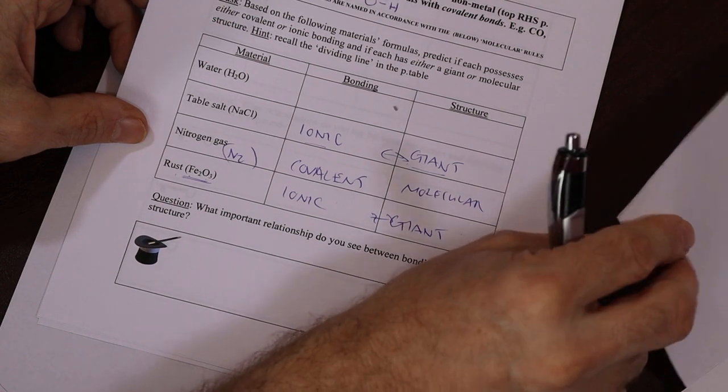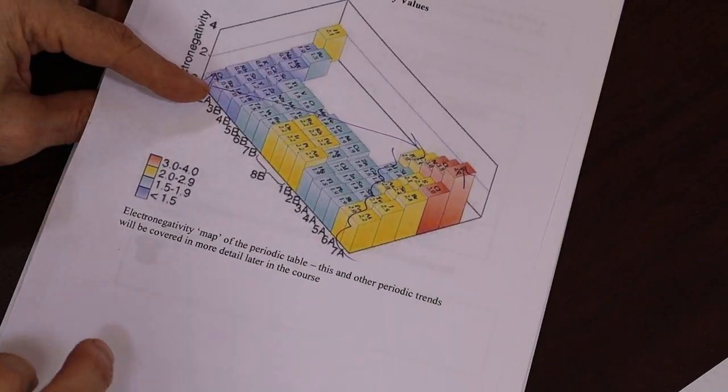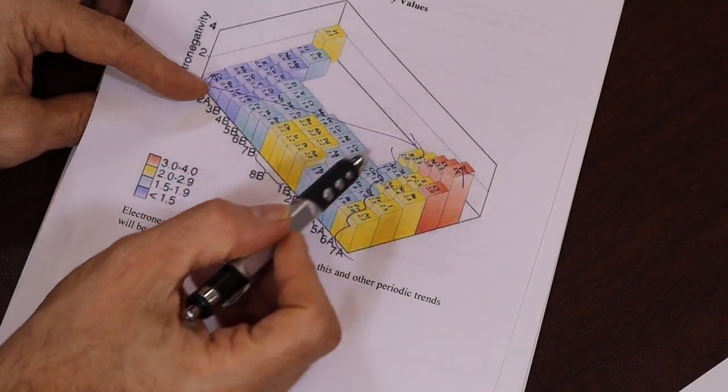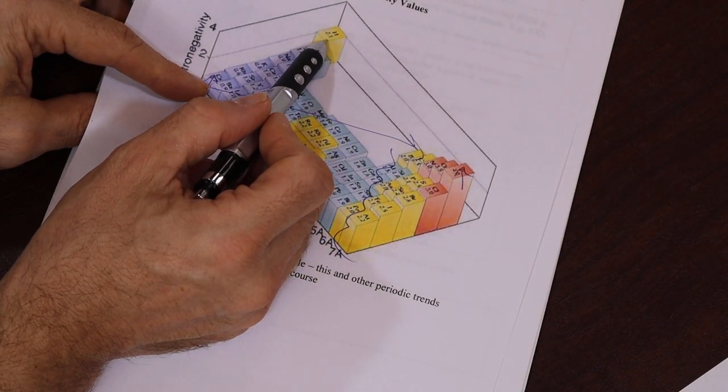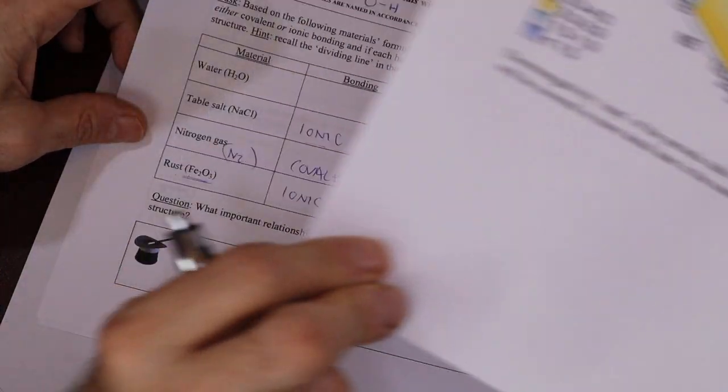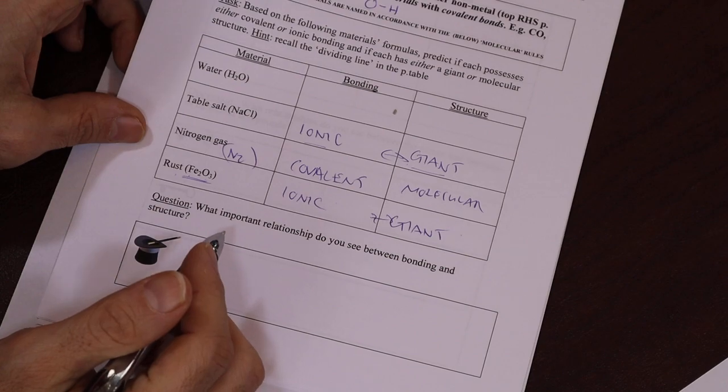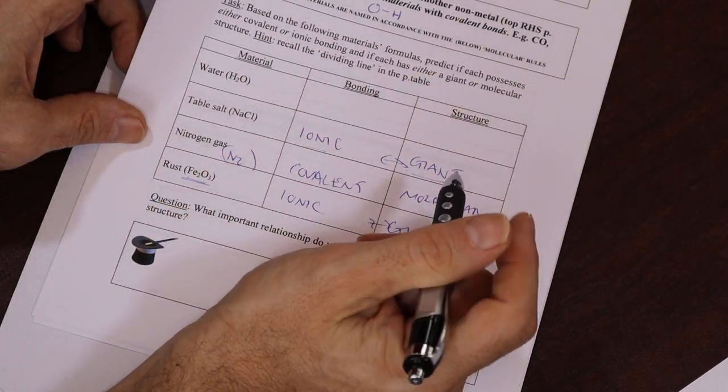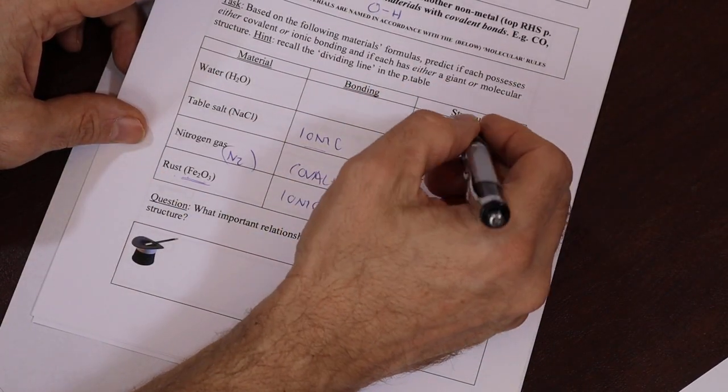Now if we go back to the electronegativity table, we see that hydrogen, although it's written here in kind of the yellow, it's kind of in between, it's kind of right on the border between metal and non-metal. So we have to kind of take it on a case-by-case basis. We know, for example, that water is molecular. We know that for sure.